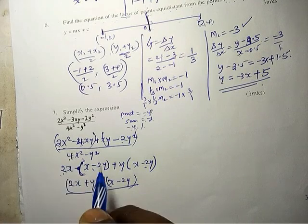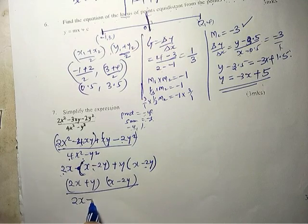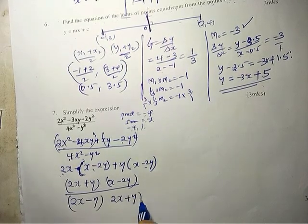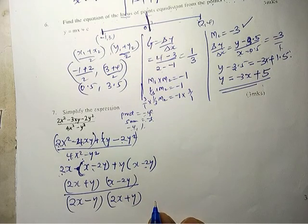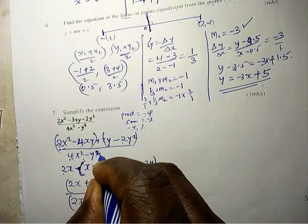...it is (2x - y)(2x + y). That's what it simply means. This is a difference of two squares, I don't know whether you know that.